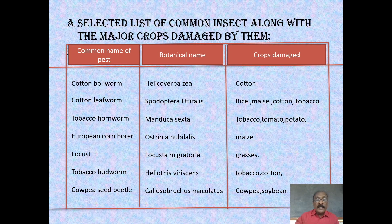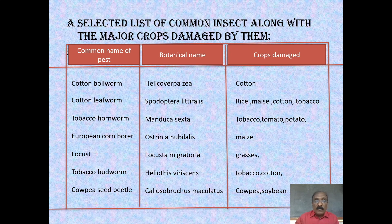This table shows a selected list of common insects along with the major crops damaged by them. The common pests include cotton bollworm, cotton leafworm, tobacco hornworm, European corn borer, locusts, tobacco budworm, and cowpea seed beetles. The table also provides their biological names and the crop plants affected by the respective insects.